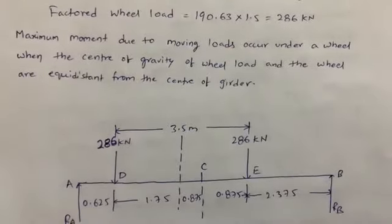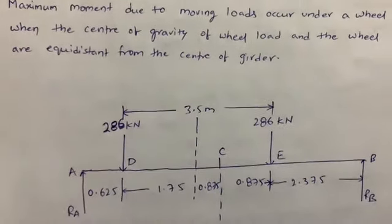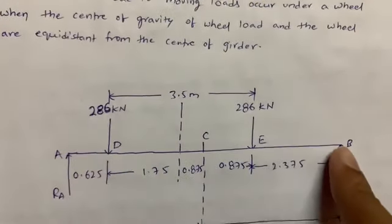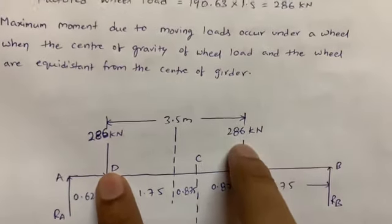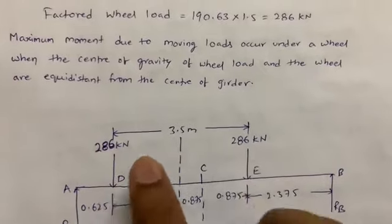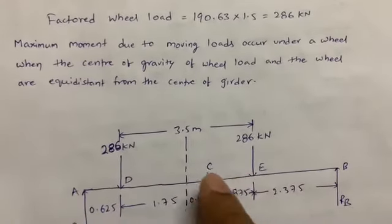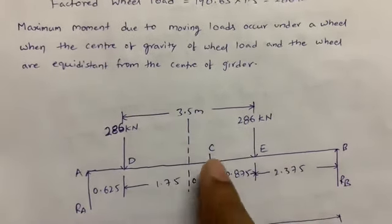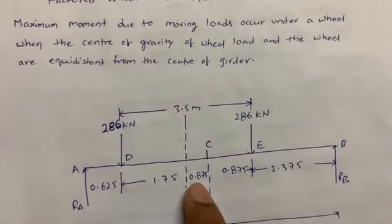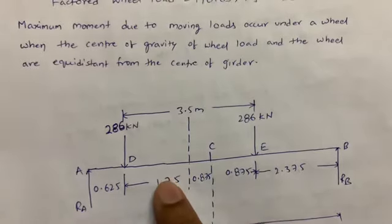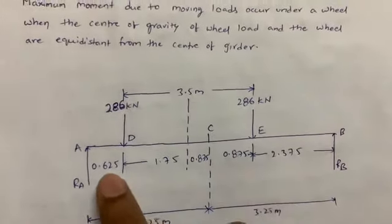For maximum moment due to moving loads, the center of gravity of the wheel loads and the wheels are equidistant from the center of the girder. The total girder has RA and RB supports; the center point is C. The wheel-to-wheel distance is 3.5 meters. Placing the two wheels symmetrically: from center, each wheel is 1.75 m apart, giving sub-distances of 0.875 m, and the remaining spans work out to 2.375 m and 0.625 m.